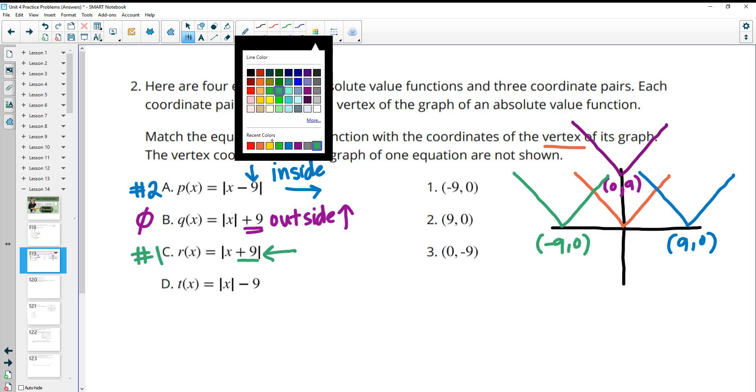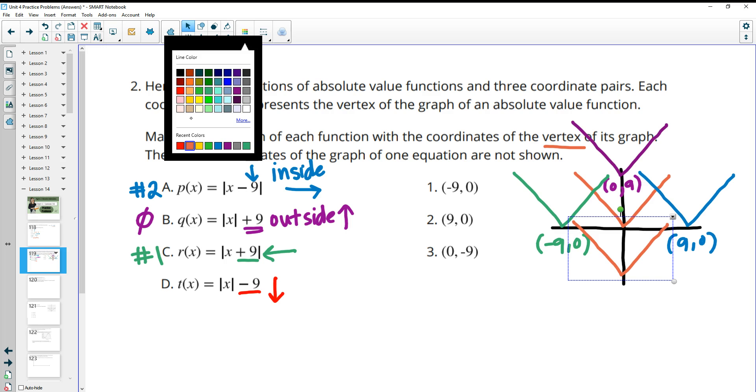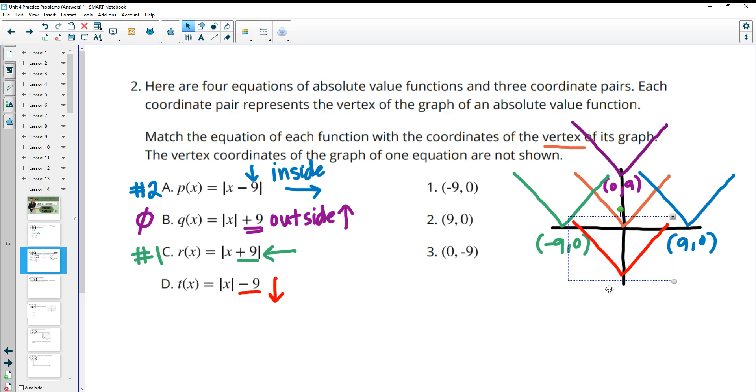And then this last one here is the negative 9 is outside, so this is going to move it down 9 units. So it's just going to grab that parent function, move it down 9. And that means that that vertex will be at the ordered pair of 0, negative 9. And that's number 3.